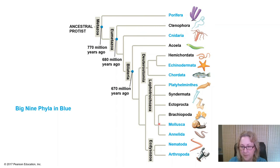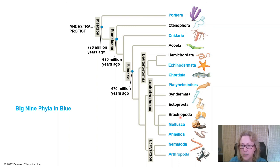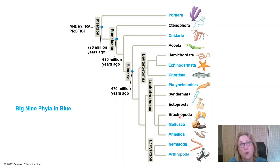Every organism in the Lophotrochozoa group either has this lophophore feeding structure as an adult or, as a larval stage, has the trochophore filter-feeding structure. This was one of the bigger arguments in animal phylogeny — how to group these invertebrates and determine who is more closely related to whom, since they are all so different. The common way of grouping them turned out to be wrong.